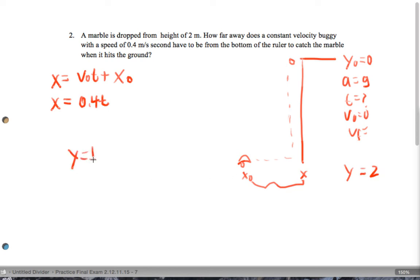So we know y equals 1 half gt squared plus v naught t plus y naught. I'm getting the time it takes the marble to fall because that's how long the car will have in order to catch the marble. So as this falls, the car is going to move forward and catch it.